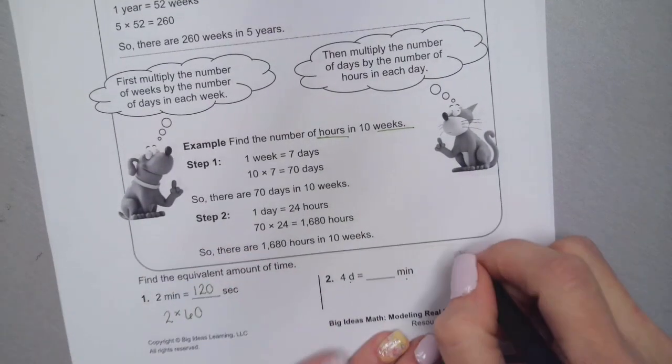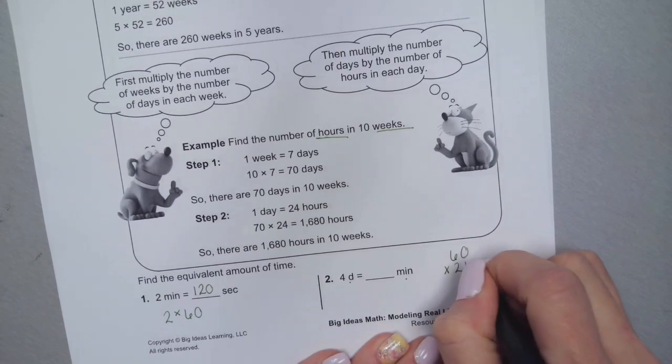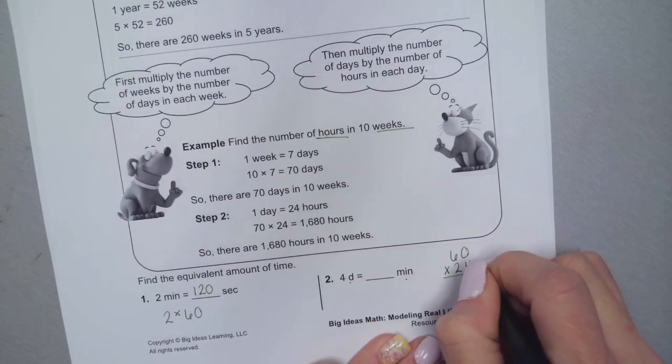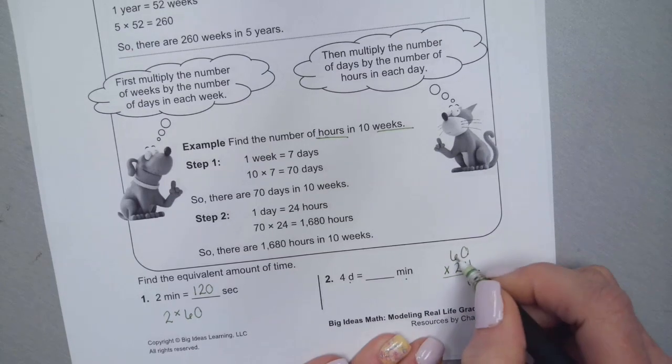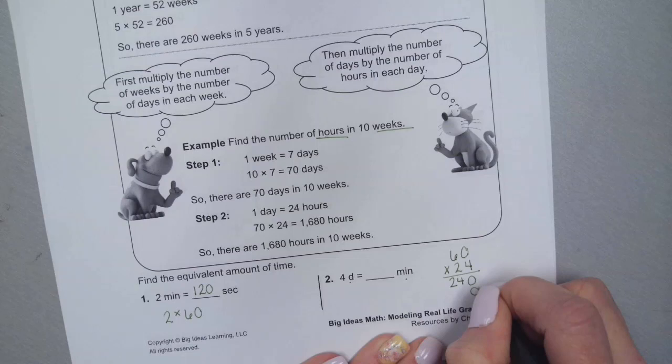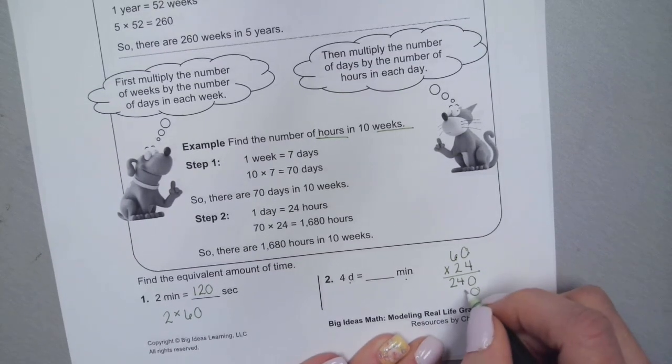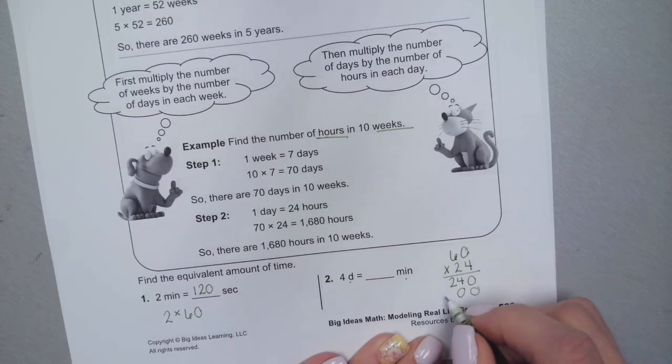That's going to be step one. 60 minutes in each hour and there are 24 hours in a day. Zero times four is zero, six times four is 24, placeholder zero. Zero times two is zero, six times two is 12. Add up these partial products.